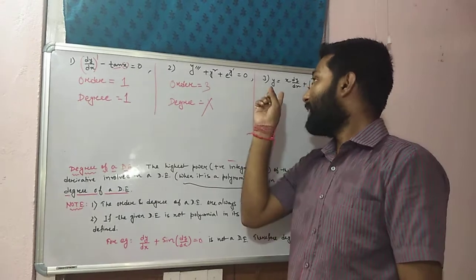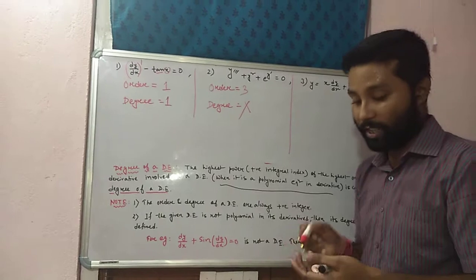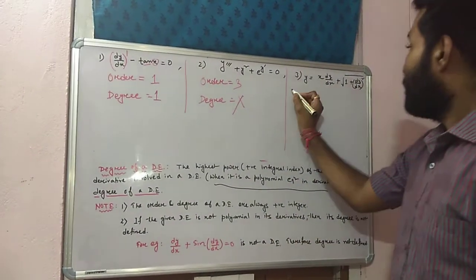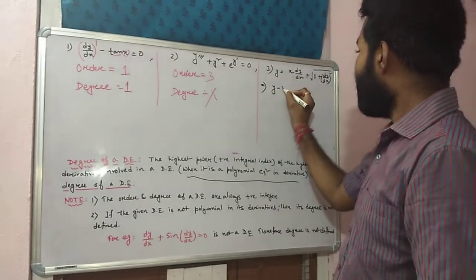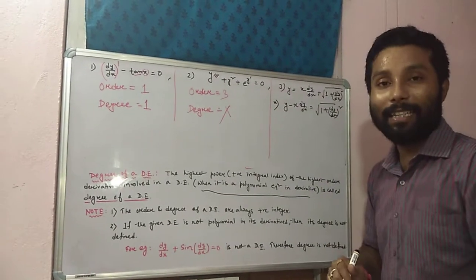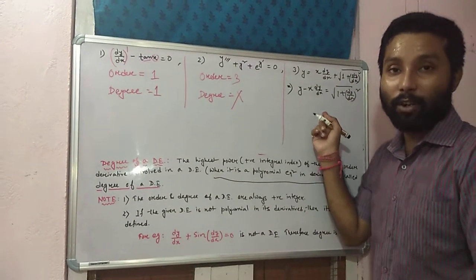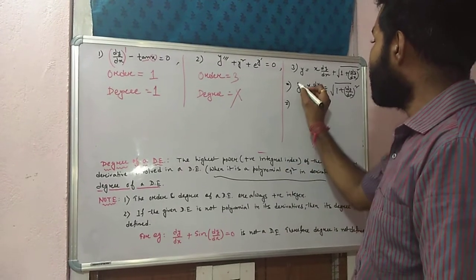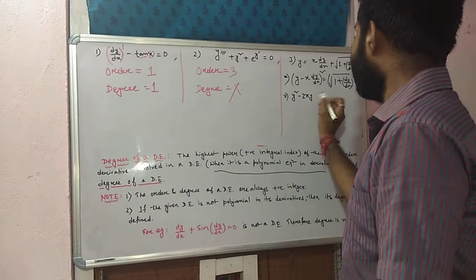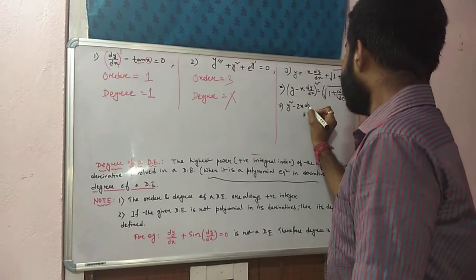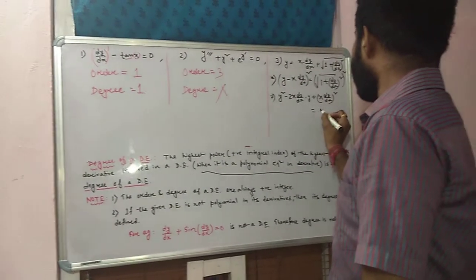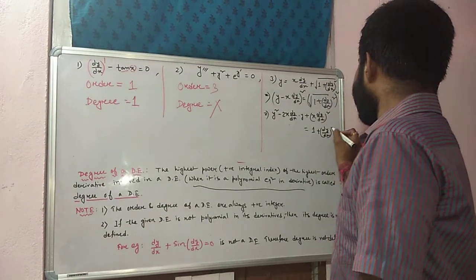We cannot determine order and degree directly. First of all, you have to modify this equation, because standard positive integer power aana chahiye. So we rearrange: y - x·(dy/dx) = √(1 + (dy/dx)²). Root over ko hatana hai, isliye squaring karna hai both sides. Squaring on both sides, apply the (a - b)² = a² - 2ab + b² formula. This gives y² - 2xy·(dy/dx) + x²·(dy/dx)² = 1 + (dy/dx)². Root over hata gaya.